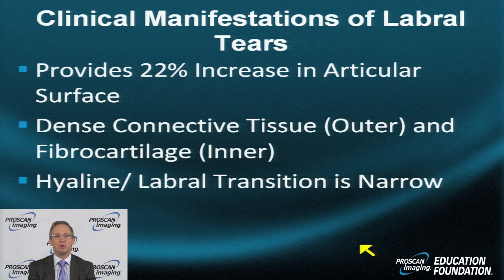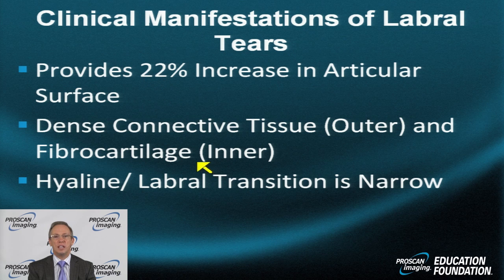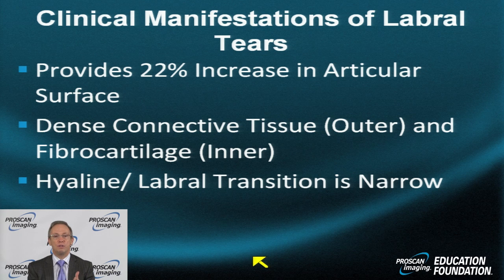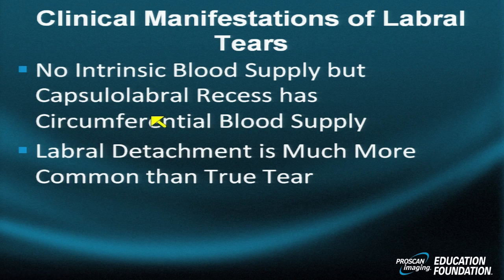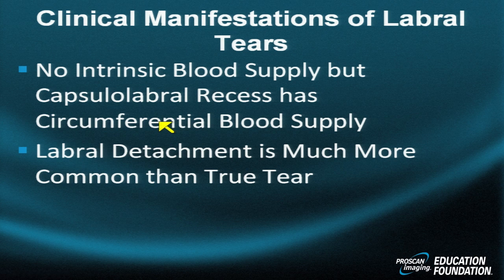The clinical manifestations of labral tear can be very variable. The labrum provides 22% of the increase in the articular surface. It is composed of dense connective tissue and collagen in the mid to outer fibers, and fibrocartilage in the inner fibers — resulting in stratification, darker inner and lighter outer. There is no intrinsic blood supply to the labrum; some circumferential supply comes from outside to inside and from the articular surface, but the very center of the labrum is relatively avascular. Therefore, it is common to see higher signal intensity in the middle of the labrum with age, much like signal intensity in the meniscus of the knee.